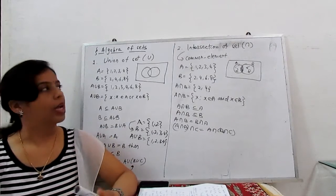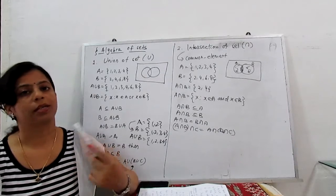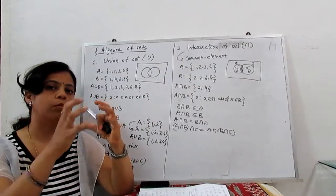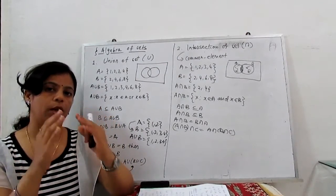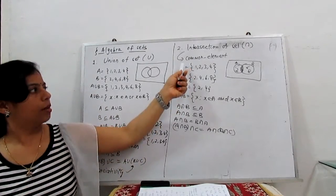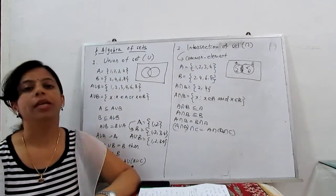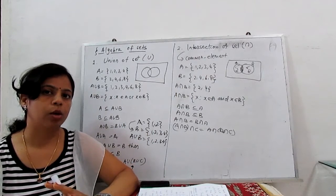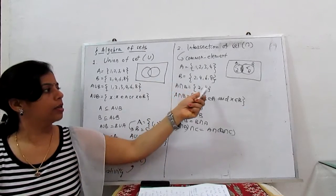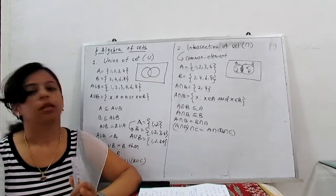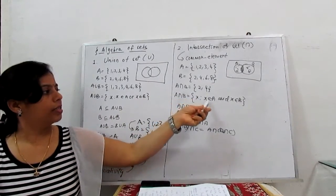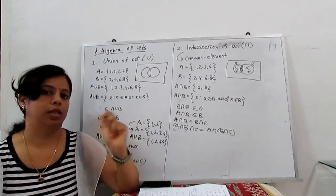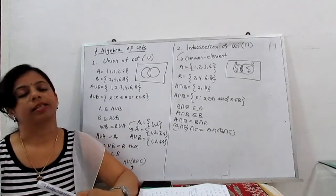The next most important algebra of sets is intersection. Intersection means the common elements — we sort out the common elements from both sets. For example, if A is {1, 2, 3, 4} and B is {2, 4, 6, 8}, then A intersection B is given by the common elements only, which are 2 and 4. In builder form: A intersection B = {x : x belongs to A and x belongs to B}. This element x must belong to both sets.